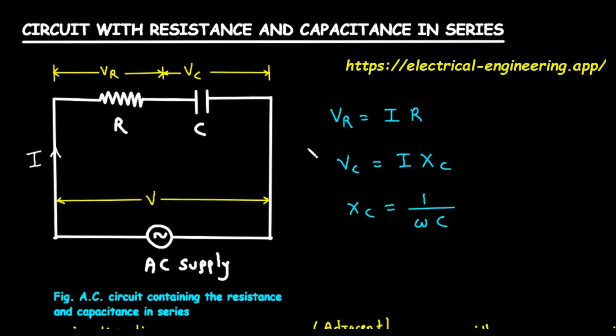For the capacitor, things are a bit different. The voltage across it, VC, is equal to the current I multiplied by a property called capacitive reactance, which we write as X subscript C. So what is capacitive reactance? You can think of it as the capacitor's specific opposition to the flow of alternating current. Its value is calculated with the formula XC equals 1 divided by the product of omega and C. Here, C is the capacitance of the capacitor, measured in farads. And omega is the angular frequency of the AC supply, which is related to how fast the voltage is alternating. A higher frequency or a larger capacitance results in a lower capacitive reactance, meaning less opposition to the current.